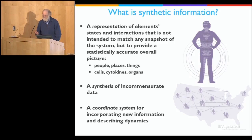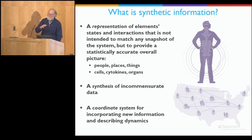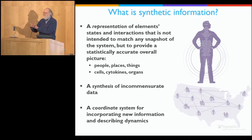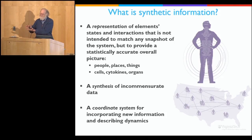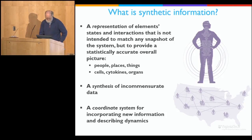Another way to think of this, that Chris likes to describe, is that this is a coordinate system for adding more data. So if you have, for example, a synthetic population and then you find out something about risk factors that you think might be useful in personalized medicine, you can add the information about those risk factors onto the synthetic population that you already have. So it's like a coordinate system for adding information.